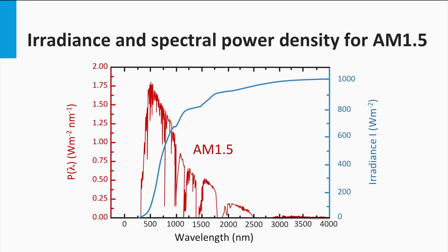The irradiance is the integration of the spectral power density function over lambda, meaning the area below the AM 1.5 spectrum in this figure corresponds to the irradiance. The blue line shows the integration from 0 up to lambda. The area below the spectral power density up to 4000 nanometers equals 1000 watts per square meter, as expected for the AM 1.5 spectrum.